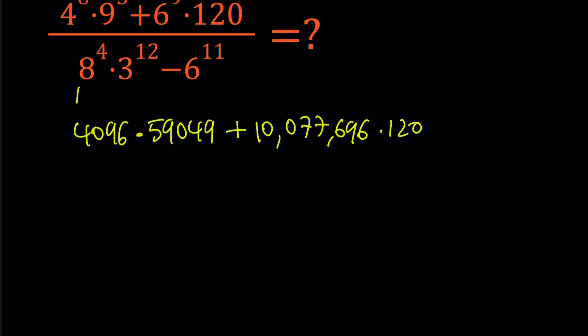Multiply that by 120, and then all of that is divided by 8 to the 4th power, which is again the same thing as 4 to the 6th power, which is 2 to the 12th, 4096. Multiply by 531,441, which is 3 to the power of 12th, minus 6 to the power of 11th, and that is equal to 362,797,056.